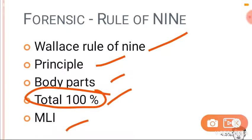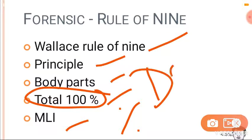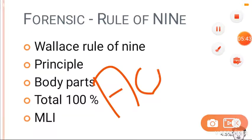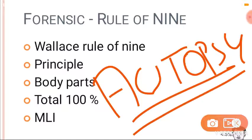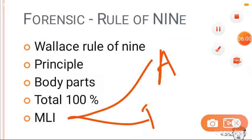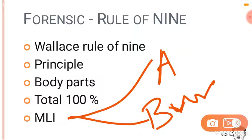The medical-legal importance: Wallace's Rule of Nine is a rough guide to estimate the percent of burns. If a person is burnt, you can estimate how much percent of the body surface area is burned. However, at autopsy, it is not recommended to use it for calculating fluid requirement for management of burns cases. It is mainly used in autopsy — for the dead — to estimate the percentage of burns. Do not use it for treating a burns case or calculating fluid requirement. That is a limitation of the Rule of Nine.